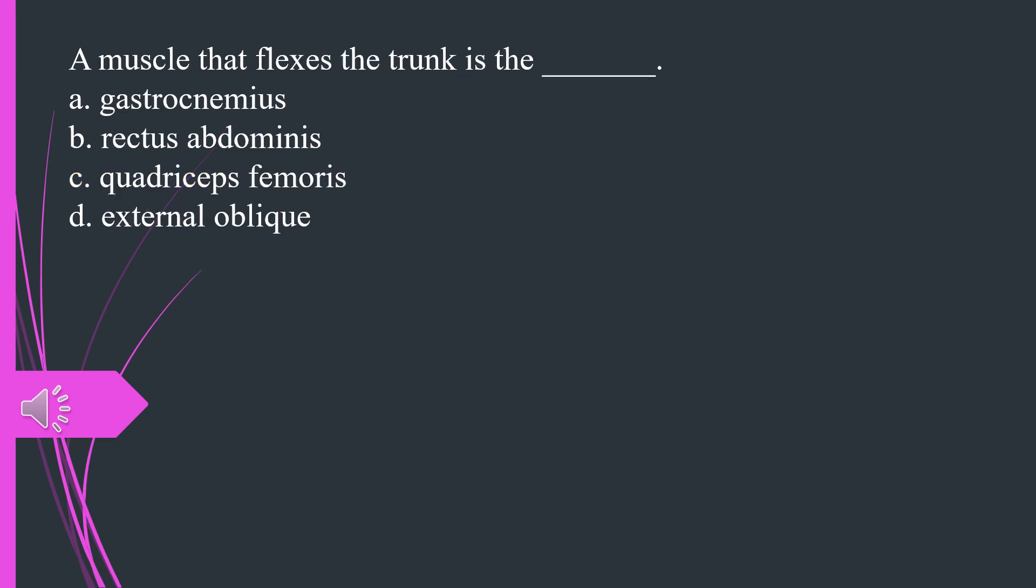A muscle that flexes the trunk is the A. Gastrocnemius B. Rectus abdominis C. Quadriceps femoris D. External oblique. The answer is B, rectus abdominis.